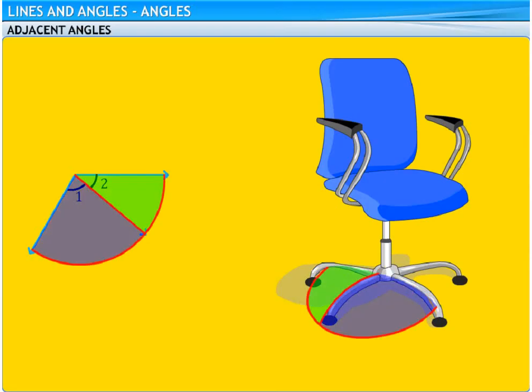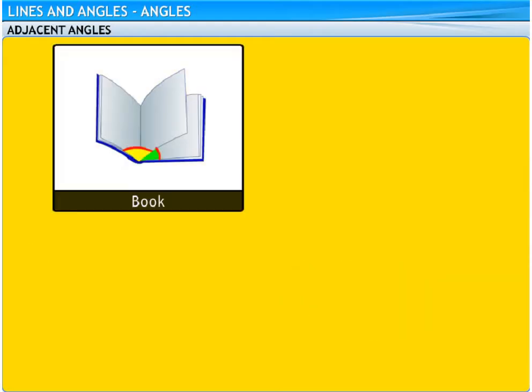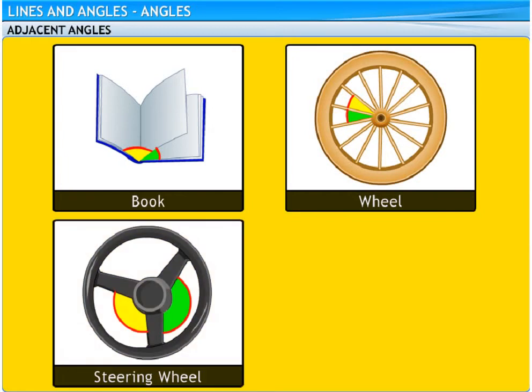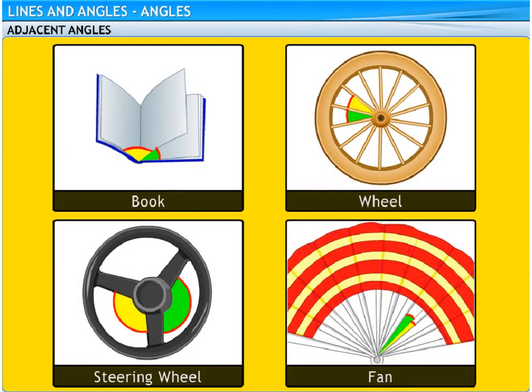Did you also observe that these angles have no common interior points? Can you think of other examples of adjacent angles? An open book, the wheels of a cart, the steering wheel of a car and a hand fan are all examples where we can find a pair of angles placed next to each other.